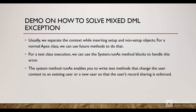Now let's see a demo on how to solve the mixed DML exception. Usually we separate the context while inserting setup and non-setup objects. For a normal Apex transaction we can use a future method, which runs in a separate thread when resources are available. But for test class execution, where we need it done immediately, we can use the System.runAs method block. System.runAs enables us to write test methods that change the user context to an existing or new user so that record sharing is enforced.